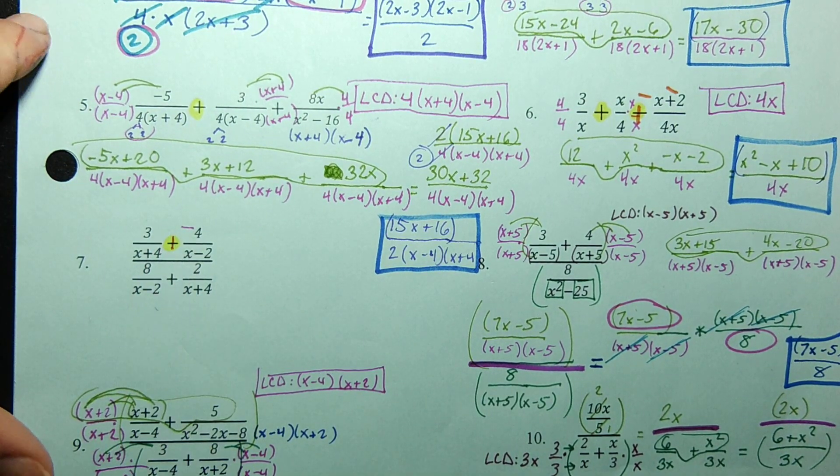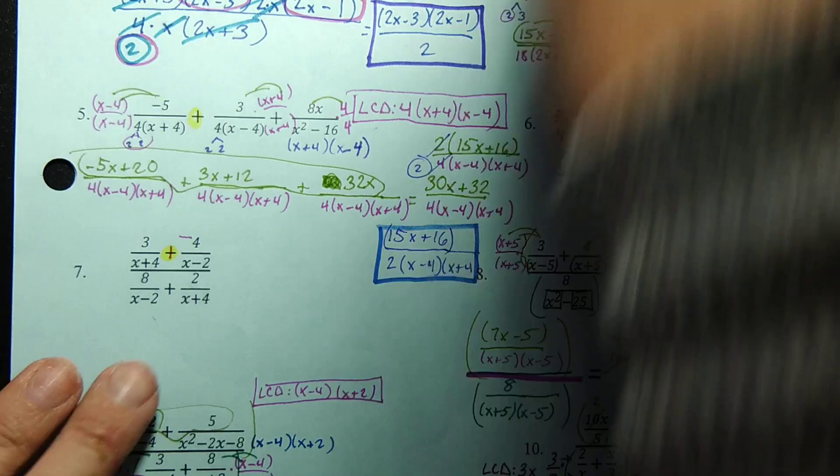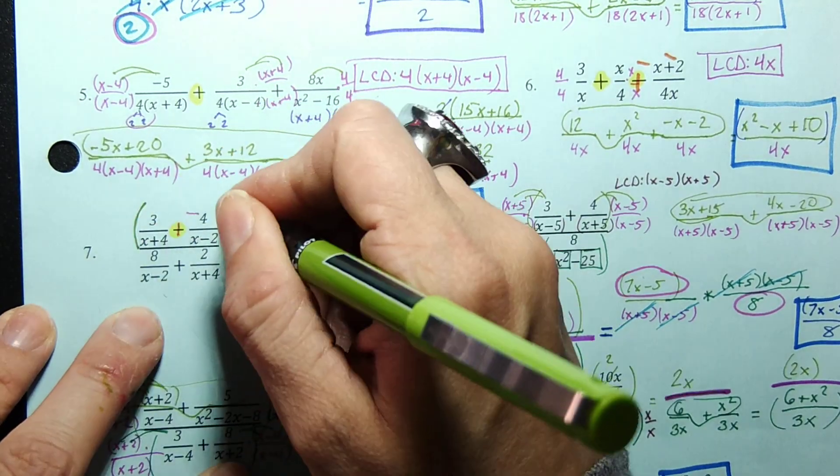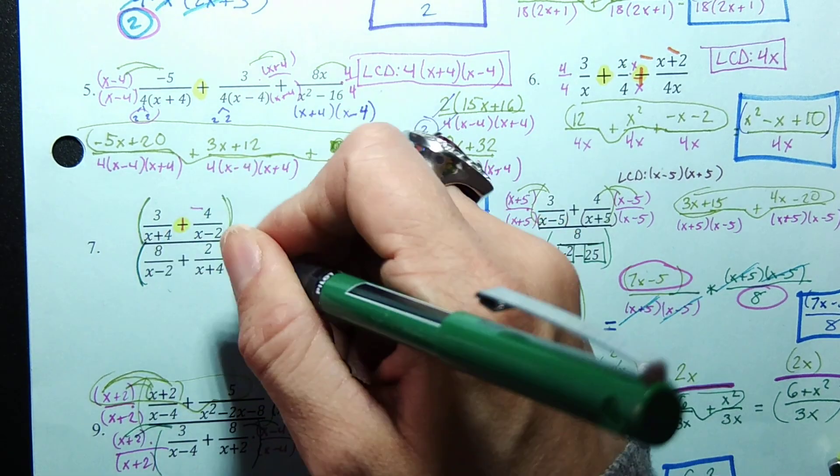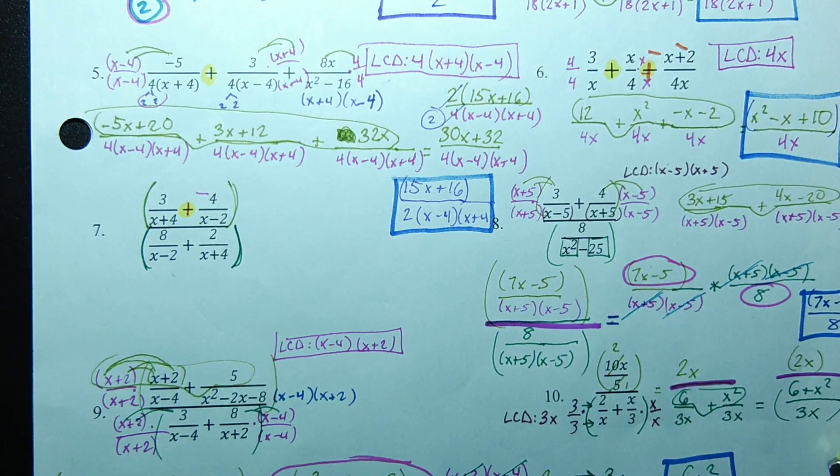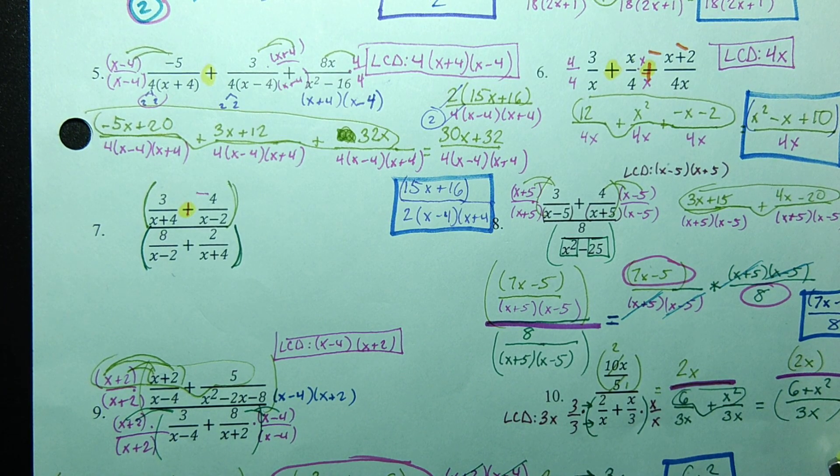Start by floating that negative up with the top. And now we can see that this is the top part of our complex fraction. This is the bottom of our complex fraction. So what we want to do is find a common denominator for the top so that we can add those two together. What would be the best common denominator to use?